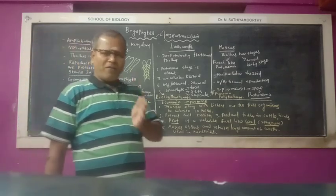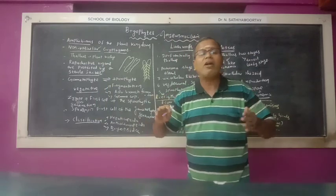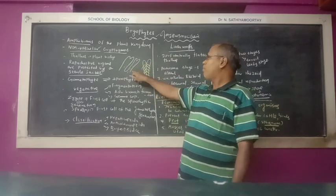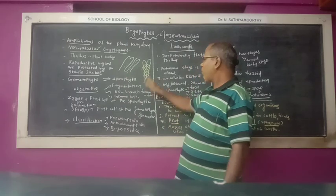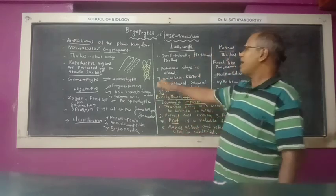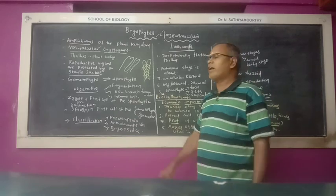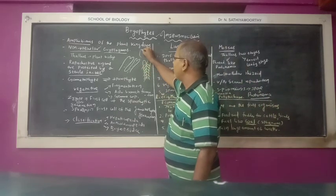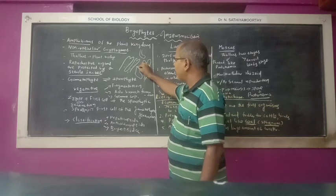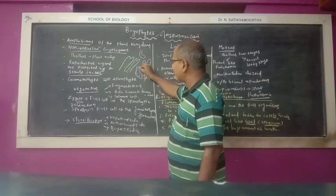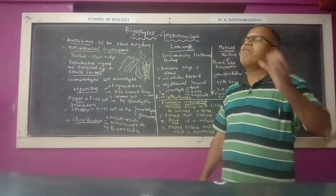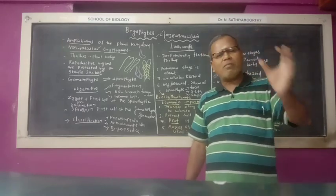The plant body is not differentiated into root, stem, and leaf-like structures, so we call it thallus. The plant body is attached to the substrate with the help of rhizoids. They have two types of rhizoids: smooth rhizoid and pegged rhizoid. The pegged rhizoid has finger-like projections, like the mitochondrial cristae. The rhizoids help in fixation and absorption.